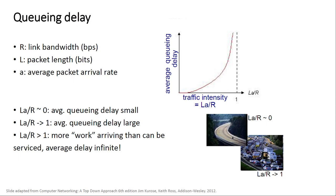For queueing delay: R is the link bandwidth in bits per second, L is the packet length, and a is the average packet arrival rate. Queueing delay is measured by La/R. If this number is close to zero there is almost no delay. As it approaches 1, queueing delay increases exponentially. If La/R > 1, more work arrives than can be serviced — delay approaches infinity and, since buffers are finite, packets will be dropped.